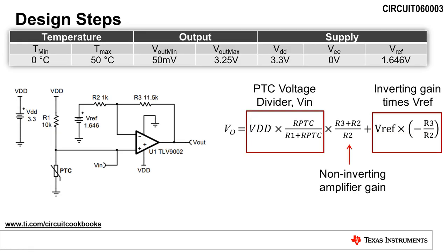The equation for VO is the transfer function of the circuit. The first term, VDD times R_PTC divided by R1 plus R_PTC, is the input voltage VIN. The second term, R3 plus R2 divided by R2, represents the non-inverting gain of the amplifier circuit. Finally, the third term, VREF times negative R3 divided by R2, represents the reference voltage times the inverting gain of the amplifier.